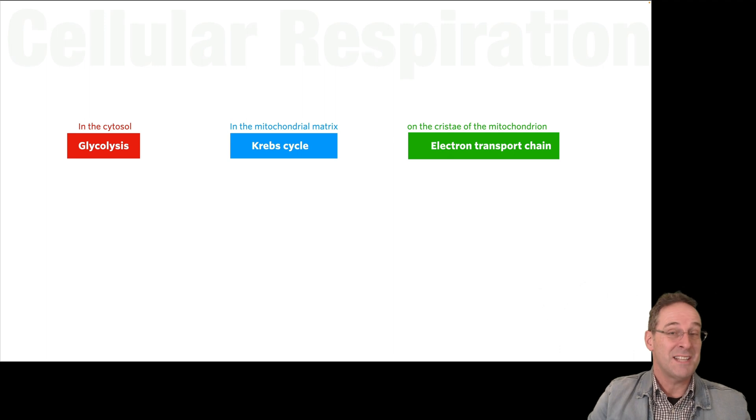I do want to preface this by saying that if you're a Victorian VCE biology student, you really don't need to remember the number of NADH and FADH2 and even carbon dioxide and oxygen. It's been 20 years since VCAR required those numbers. The one exception to that is ATP. You absolutely need to know the number of ATP that are produced by each stage of cellular respiration.